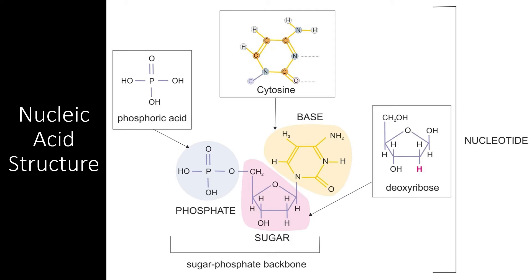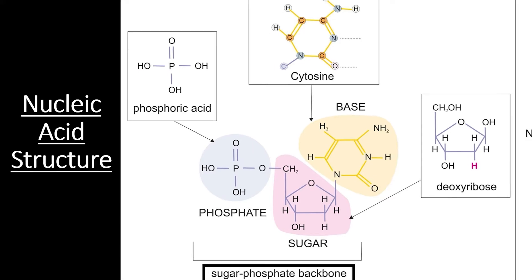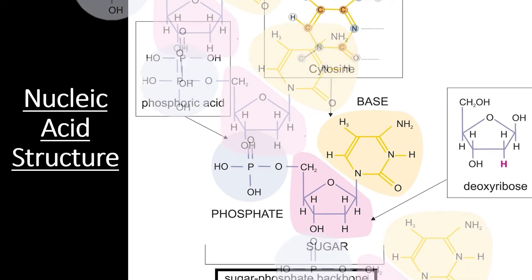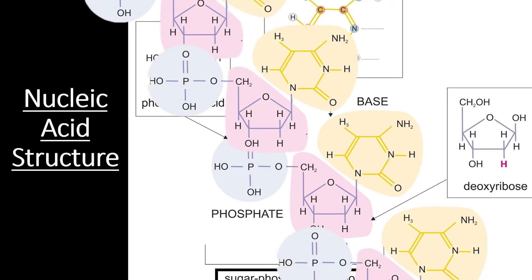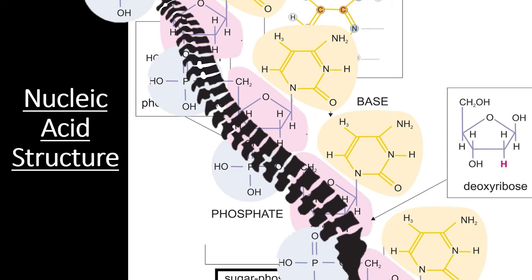Let's start with arguably the most important biological macromolecule: nucleic acids. To fully understand how nucleic acids work, we need to look at their structure. At the center of every nucleic acid is the sugar-phosphate backbone. Each phosphate group from one nucleotide monomer bonds to the sugar group on the next monomer to create a rigid structure known as the backbone of DNA.